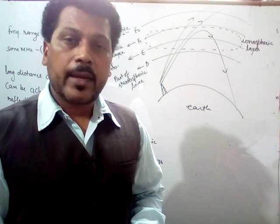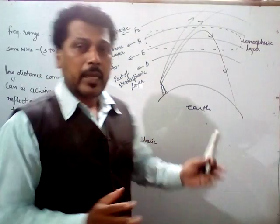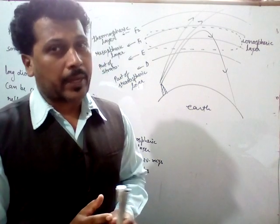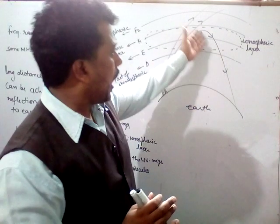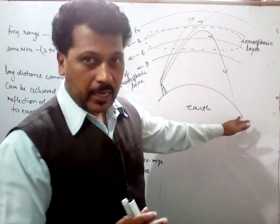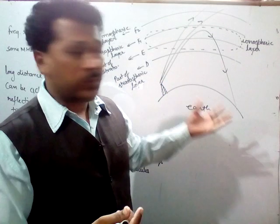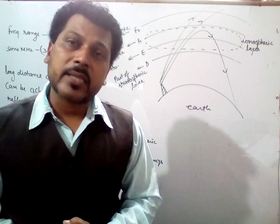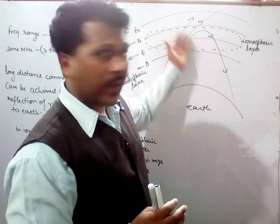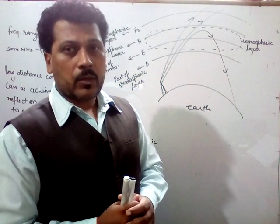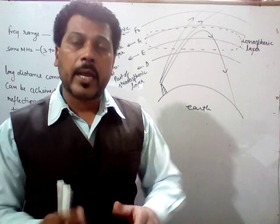Hello guys, good morning to all of you. This is Maggie Raj here. Now we are going to discuss about sky wave propagation. Sky waves is another mode of propagation of radio waves. Whenever a wave gets reflected in the ionospheric layer and comes back to the earth, this mode of propagation is known as sky waves — those waves which get reflected from the ionospheric layer.